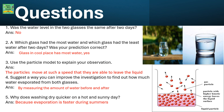Here are a few questions to answer. Was the water level in the two glasses the same after 2 days? No. Which glass had the most water and which had the least after 2 days? Was your prediction right? The glass kept in the cool place has the most water — and yes, the prediction was correct. Use the particle model to explain your observation: the particles move at such a speed that they are able to leave the liquid. You can improve the investigation by measuring the amount of water before and after. Washing dries quicker on a hot and sunny day because evaporation is faster during summer.